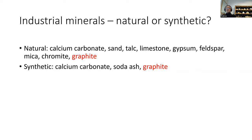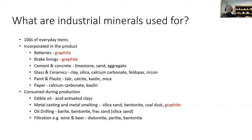Industrial minerals are used for hundreds of everyday items around us. Graphite is highlighted in red. They may be incorporated into the product — for example, graphite anodes in a battery, or graphite additive in brake linings. Minerals that go into glass, ceramics, paint, plastic, and paper are incorporated in the final product. A lot of copy paper contains a lot of calcium carbonate.